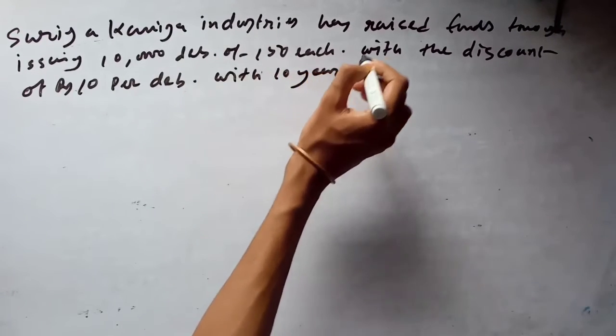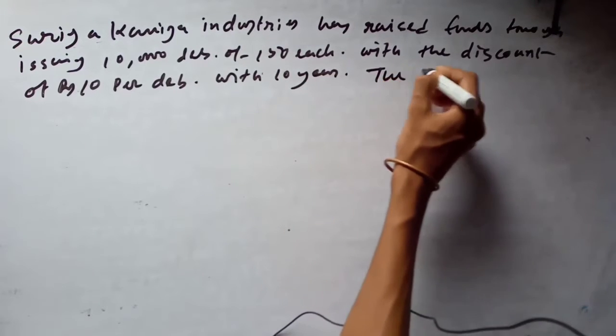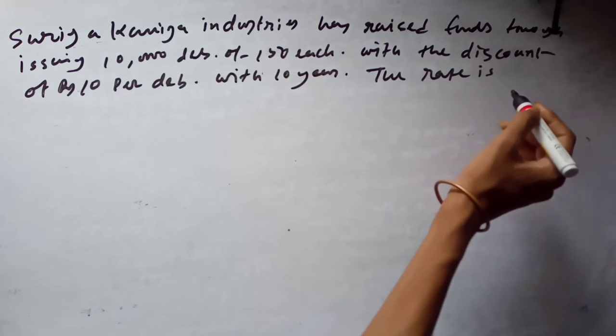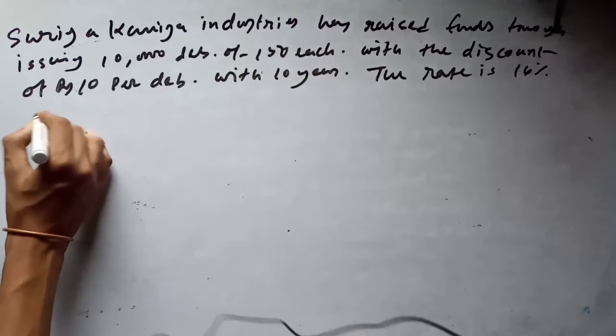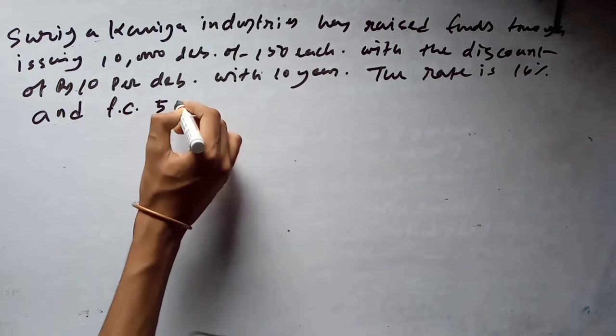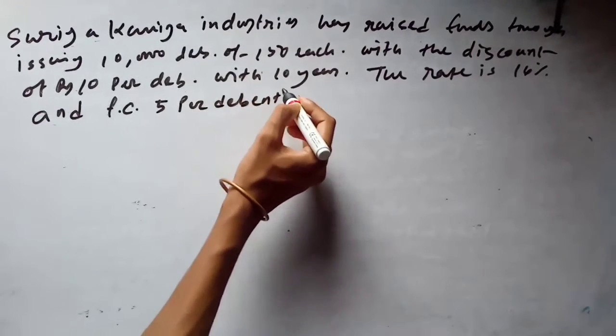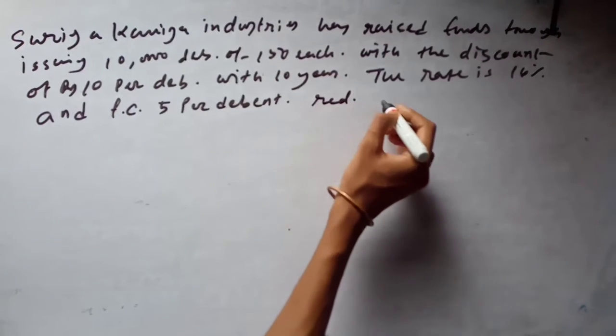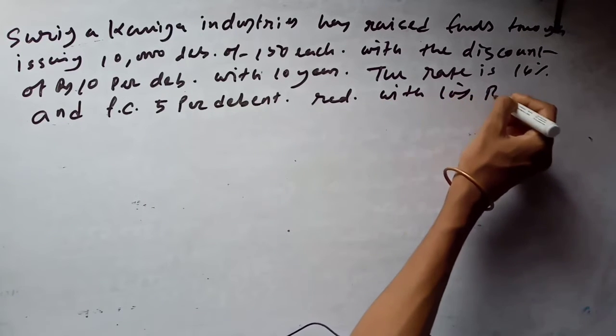Surya Kanaiya Industries has raised funds through issuing 10,000 debentures of 150 rupees each with a discount of 10 per debenture, with a limitation of 10 years. The rate is 16% and the flotation cost is 5 per debenture. The debentures are redeemable with 10% premium.